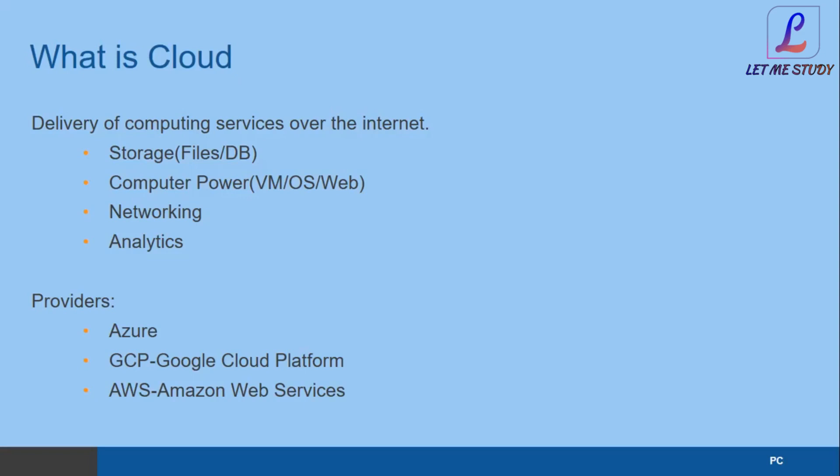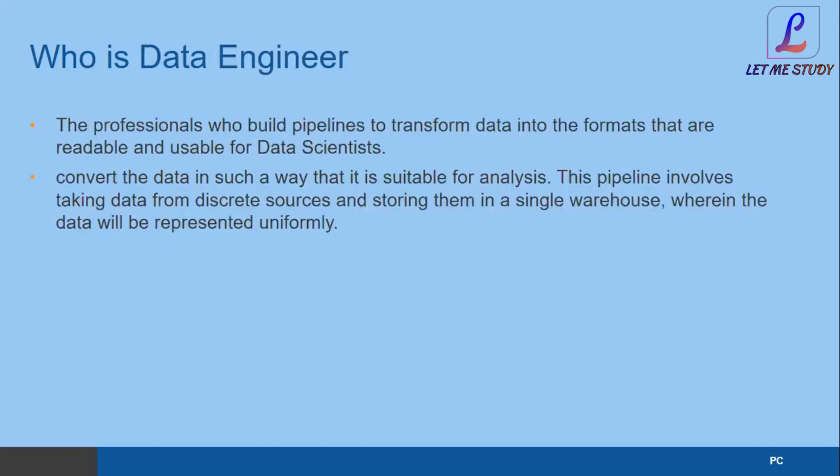When you're using the cloud, your data and application will be replicated to other regions. If something happens in a particular country, the copy available in another region will come up so there won't be any disturbance to customers. This is how cloud has many advantages over enterprises, and that is why all applications started migrating from on-premises to cloud.